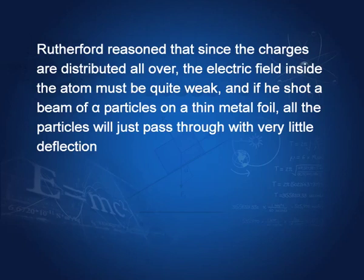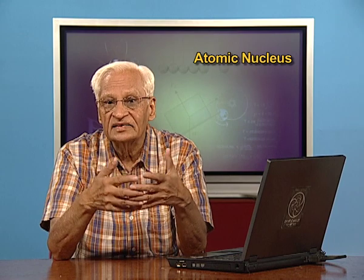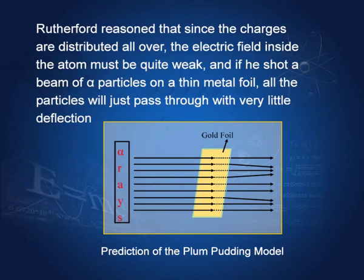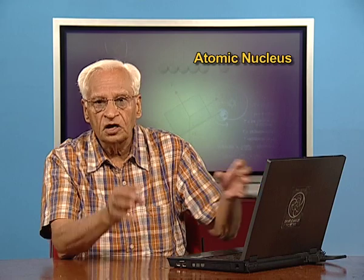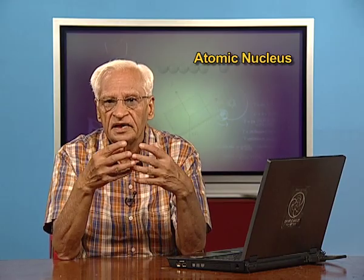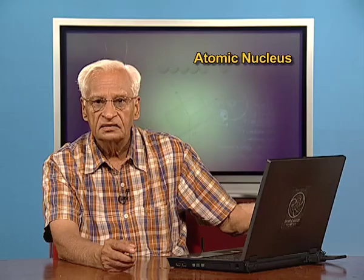Now, if it is a plum pudding model, then Rutherford reasoned that since the electric field inside is quite weak — the fields of electrons and protons cancel — therefore the field inside is quite weak. Rutherford thought that if he shot a beam of alpha rays on a target, say a gold foil, then because the atoms are neutral and the electric field inside the atoms is weak, all these alpha particles would go through with very little deflection. A few of them would be deflected by very small angles. That is what he thought.